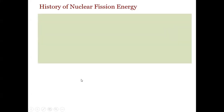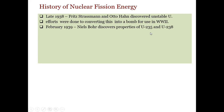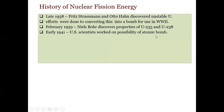Strassman and Otto Hahn discovered unstable uranium and its properties. Efforts were then made to convert this into an uncontrolled material for use in war, and the Second World War saw such materials used as bombs. In February 1939, Niels Bohr discovered the properties of U-235 and U-238 separately, and by 1941, US scientists began working on the possibility of making a nuclear weapon — the Manhattan Project.